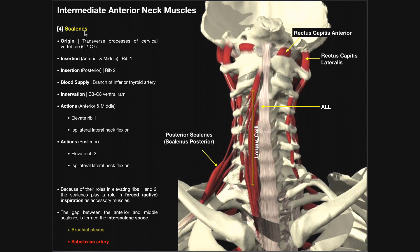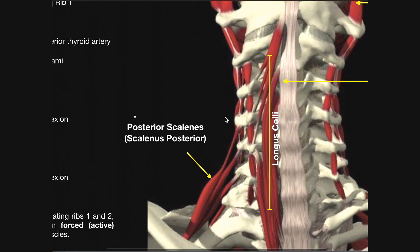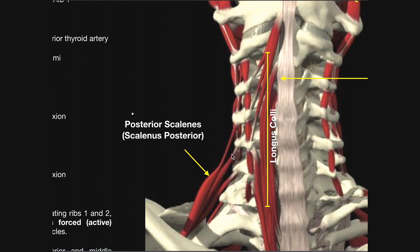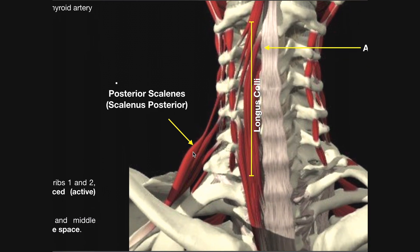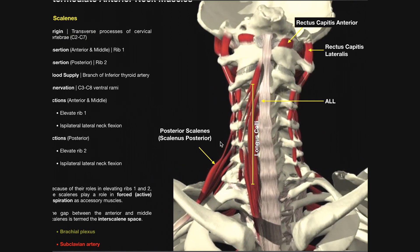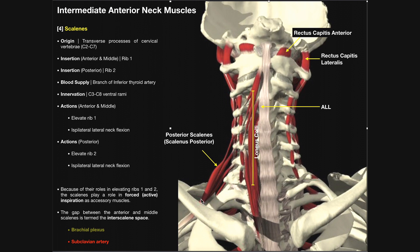The scalenes are a group consisting of anterior, middle, and posterior scalenes. Collectively, these muscles originate on the transverse processes of cervical vertebrae from C2 down to C7. Looking at the posterior scalenes first, they originate on the transverse processes of C4, C5, and C6, and descend downward to insert on the second rib.